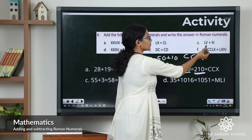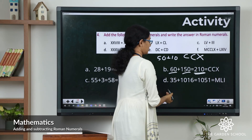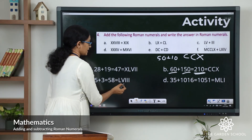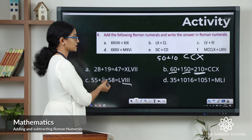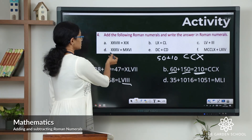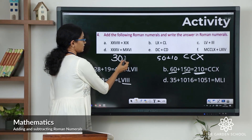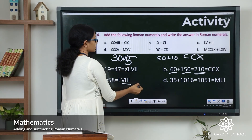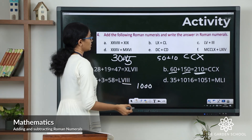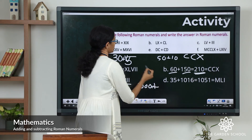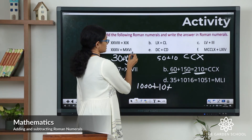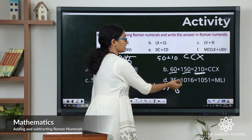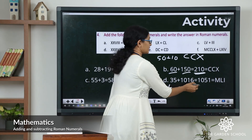Next: LV — L is 50, V is 5, total 55. Plus 3, so 55 plus 3 is 58. For 58: L represents 50 and 8 is VIII. So the Roman numeral is LVIII. Question D: three X's equals 30, plus 5 gives 35. Then MXVI — M is 1000, X is 10, and 6 gives 1016. So 35 plus 1016 equals 1051.